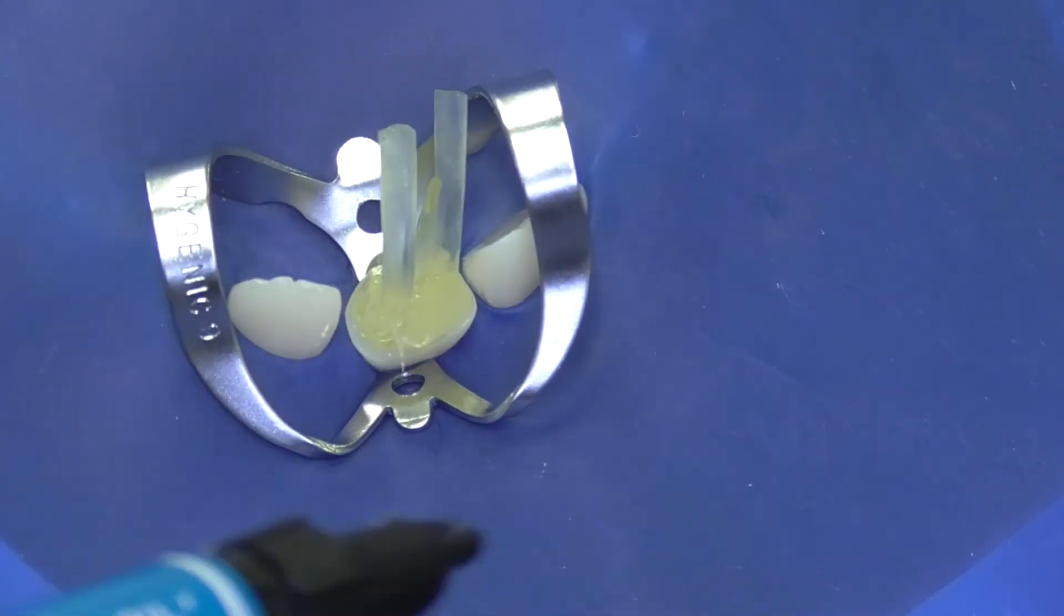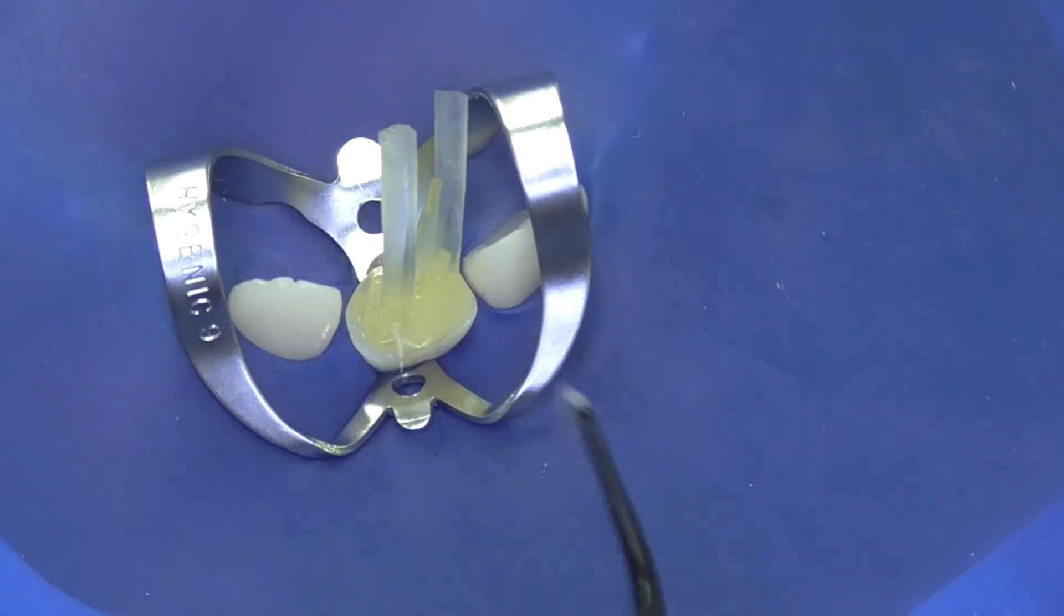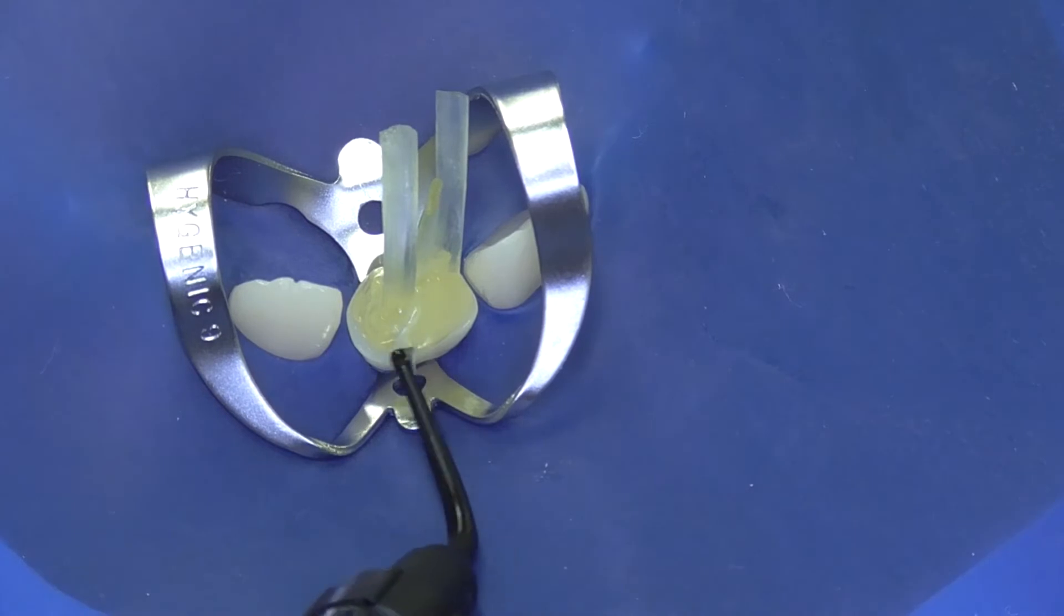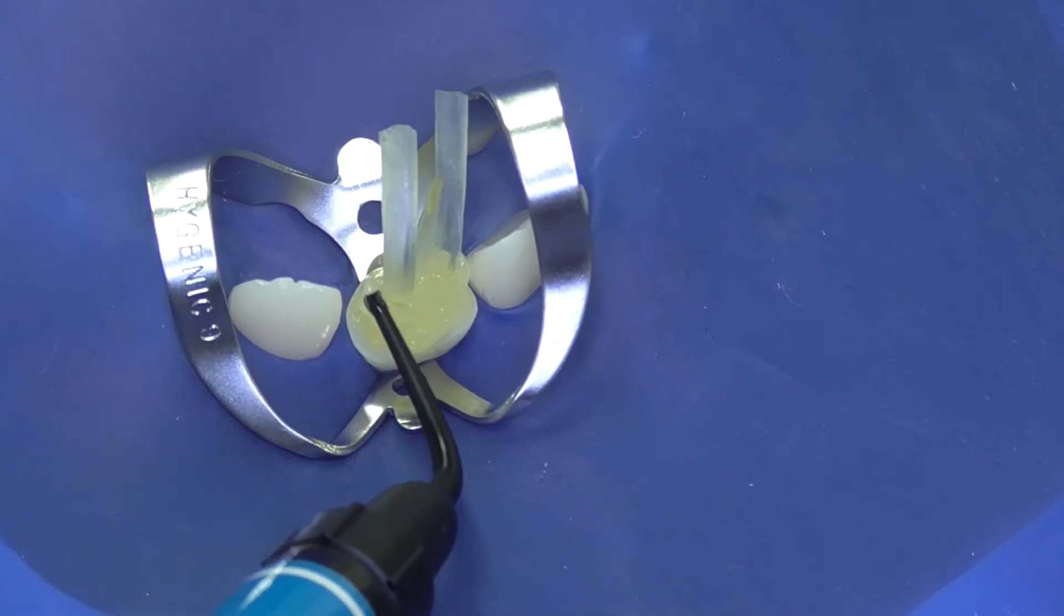Curing depth of bulk shade EverX Flow is five millimeters, which means that curing of the core can even be made at once.